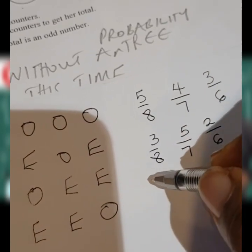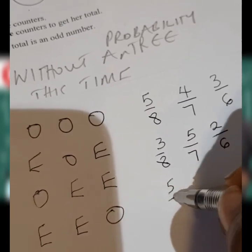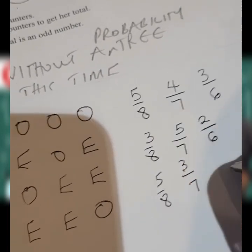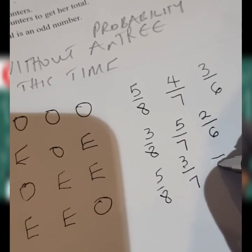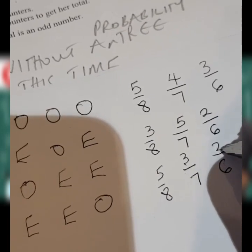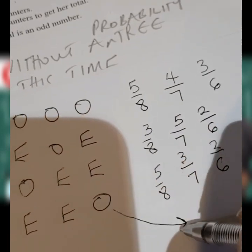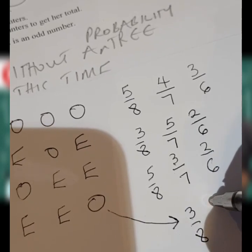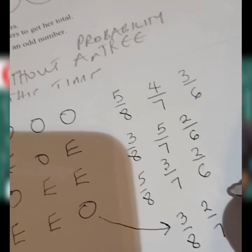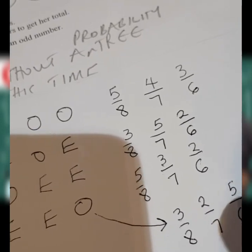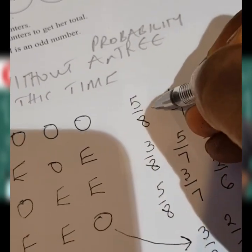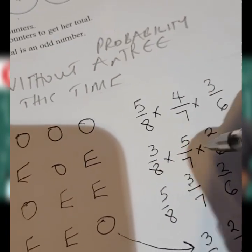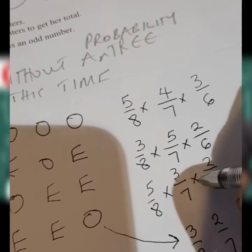For the odd, even, even combination: odd is 5 out of 8, then with 7 counters left the even probability is 3 out of 7, and with 6 left the second even is 2 out of 6. For the even, even, odd combination: the first even is 3 out of 8, the second even is 2 out of 7, and the odd is 5 out of 6. Because of this type of probability, you multiply all these numbers through and then add them together to get the answer.